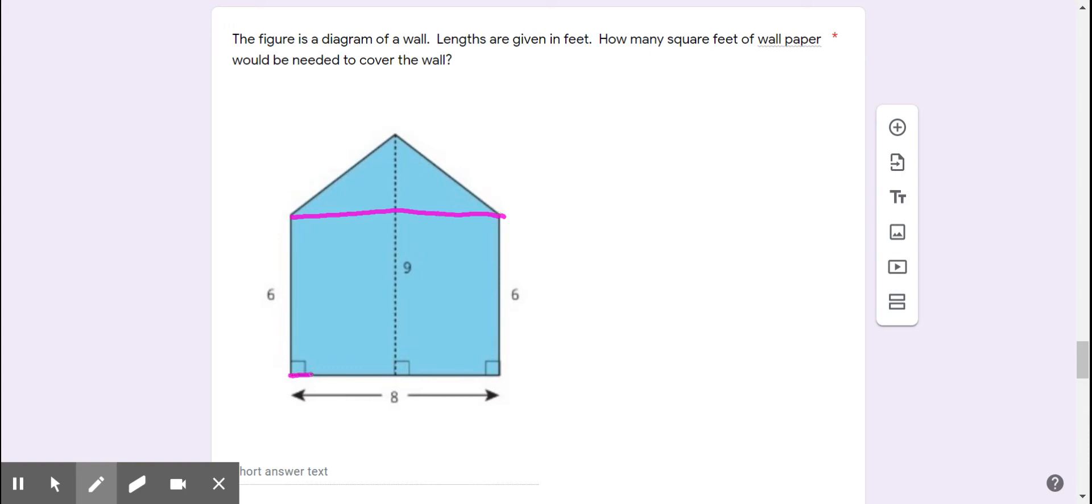The rectangle is 8 units for the base and 6 units for the height. We're dealing with feet here. Rectangle is base times height. 8 times 6 is 48, 48 square feet for the wall part.